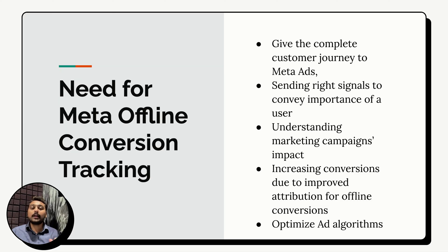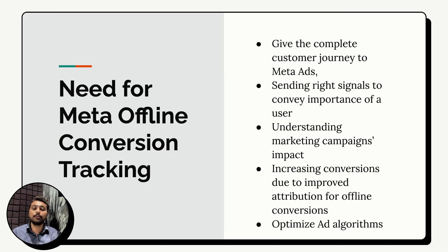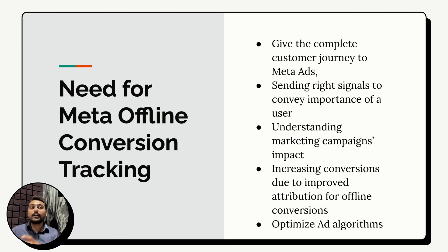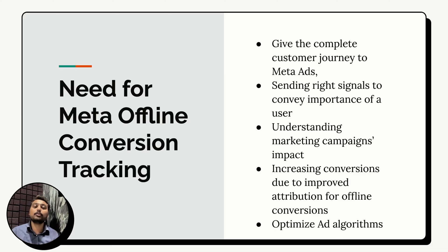Meta can then understand what kind of users are resulting in conversions and what kind of ad clicks are leading to conversions, optimizing its algorithm to find more relevant users. It also helps marketers understand the impact of their campaigns. For example, if you're running a campaign for iPhone, how do you measure the ROAS of that campaign? You need to set up offline conversion tracking so you can accurately attribute purchases back to Meta Ads.